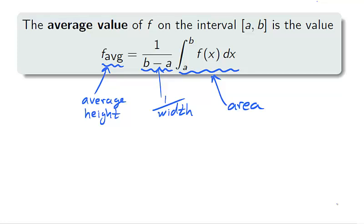To remember this formula, the value f average represents the average height of the curve, while b minus a is the width of the interval. The integral represents the area. So just like in a rectangle, the height is equal to the area divided by the width.